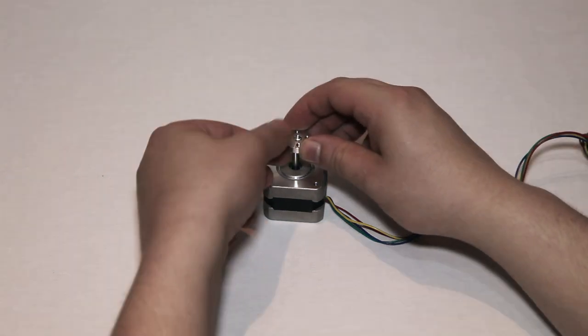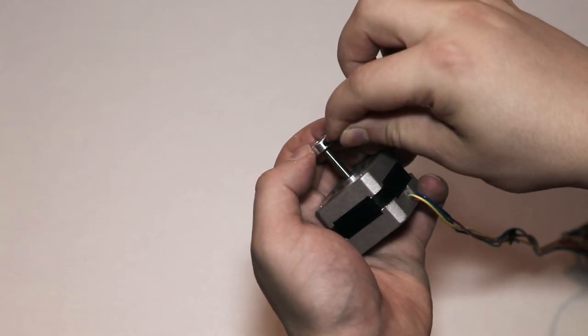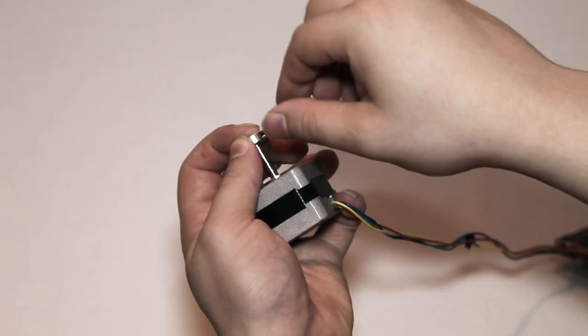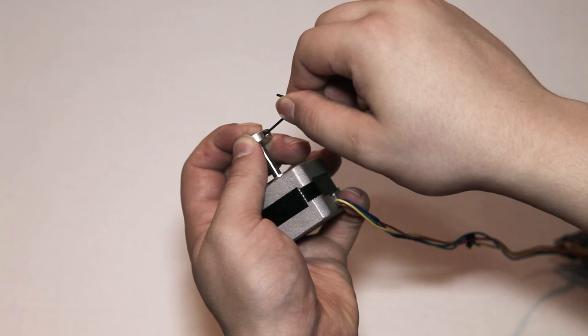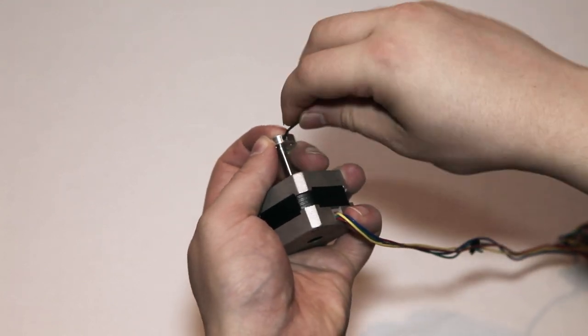When the screw is almost in place, we can start tightening it to the shaft. Be careful not to apply too much power when tightening the screw, because you might end up rounding the wrench hole and thus make it impossible to screw further. This happened to us once, which is why it's good that there is one extra screw in the package.